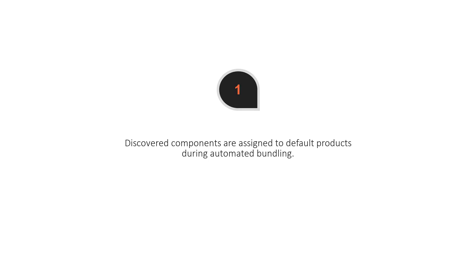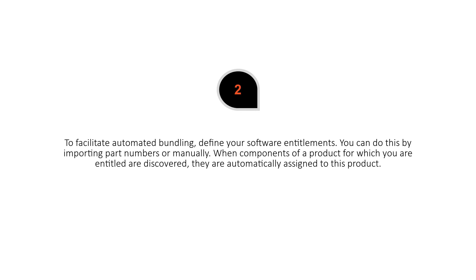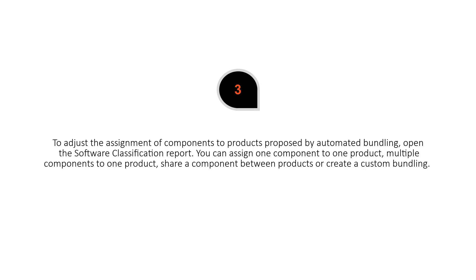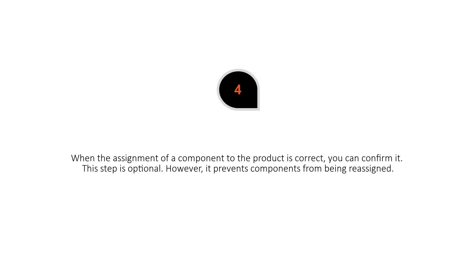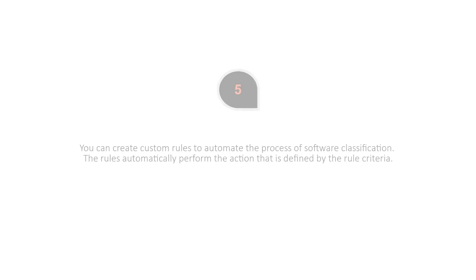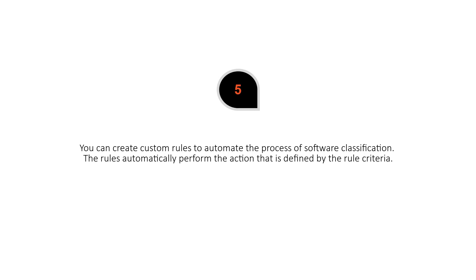Here's the takeaway. First, discovered components are assigned to default products during automated bundling. Second, to facilitate automated bundling, define your software entitlements — you can do this by importing part numbers or manually. When components of an entitled product are discovered, they are automatically assigned to that product. Third, to adjust component-to-product assignments, open the Software Classification Report; you can assign one component to one product, multiple components to one product, share a component between products, or create a custom bundling. Fourth, when the assignment is correct, you can confirm it — this step is optional, but it prevents components from being reassigned in the future. Fifth, you can create custom rules to automate the process of software classification; the rules automatically perform the action defined by the rule criteria.